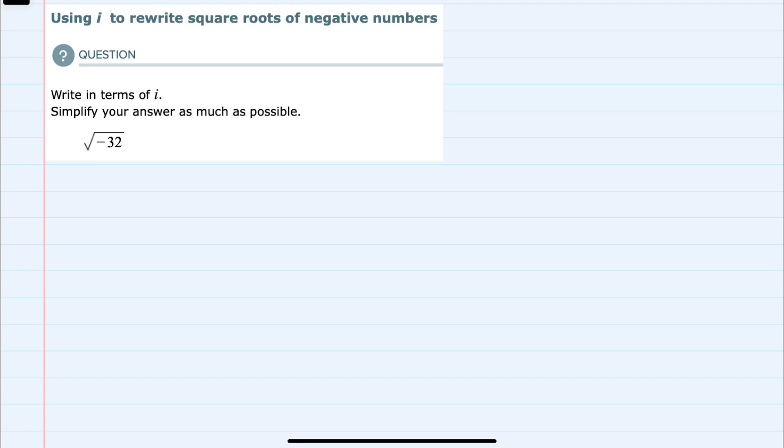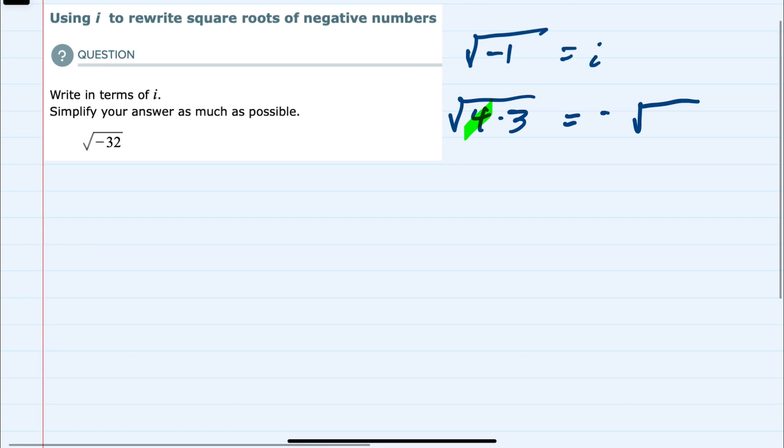The two ideas that we need to keep in mind are, first, that the square root of negative 1 can be rewritten as just i. And the second is that if we have the square root of numbers being multiplied and one of those numbers is a perfect square, we can simplify by taking the square root of that perfect square and moving it outside so that that 4 comes outside as the square root of 4, which is 2. And then anything that's not a perfect square stays inside the radical.